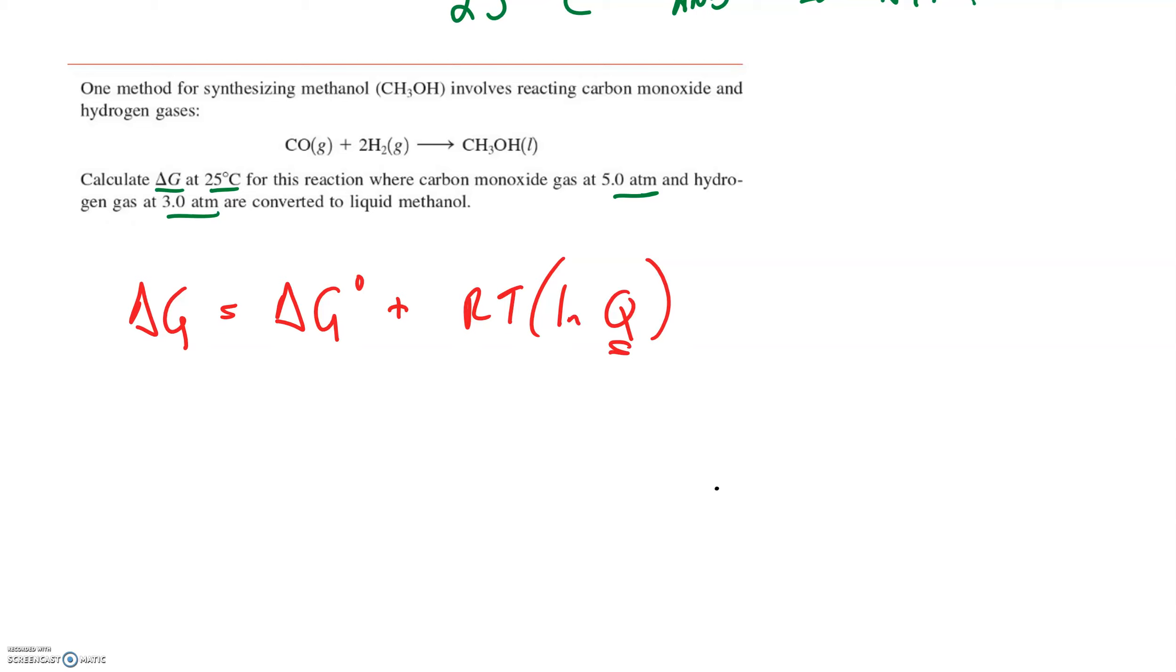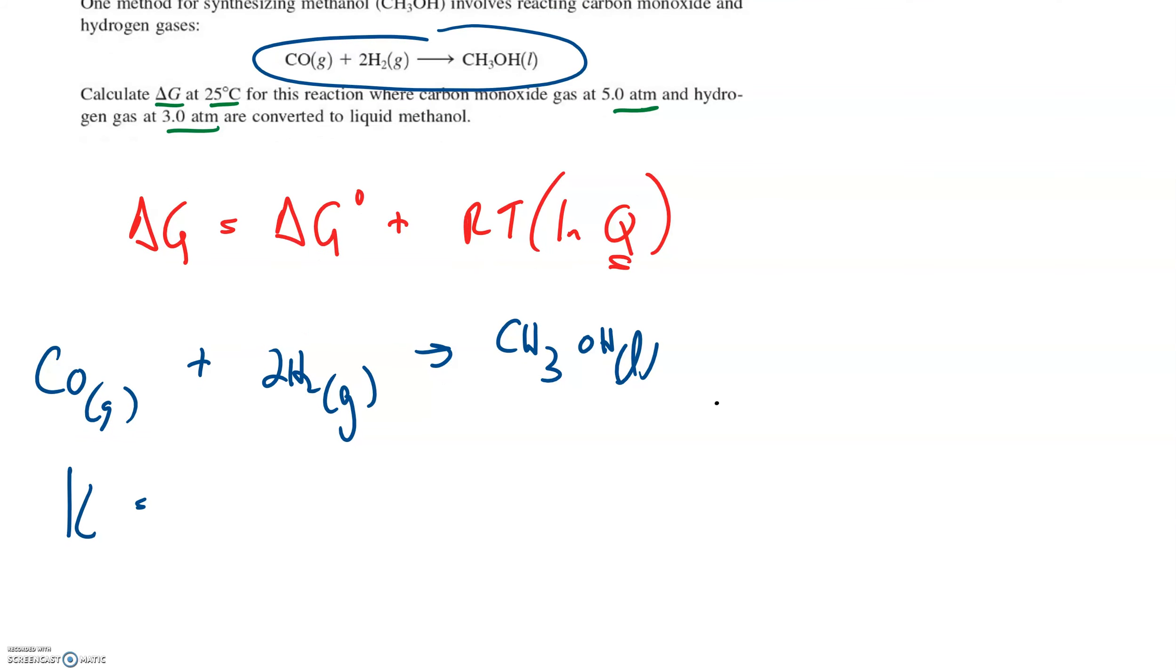When we started doing all this equilibrium stuff way back in chapter 13, we could write the equilibrium expression for a reaction like this. We have carbon dioxide gas plus hydrogen gas producing methanol, which is a liquid. If we were going to write the equilibrium expression for this, there's only one product and it's a liquid, and that doesn't come into any kind of part of the equation. It'll just be a one because it can't change its concentration. But we can include the partial pressure of the carbon monoxide gas times the partial pressure of the hydrogen gas. We'll have to pay attention to coefficients and there's a little 2 next to this, so we'll put a 2 there.